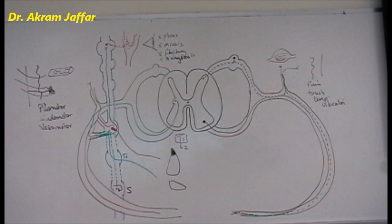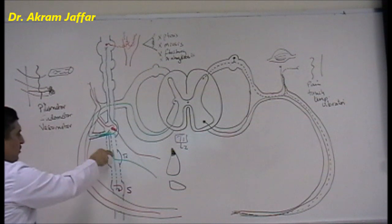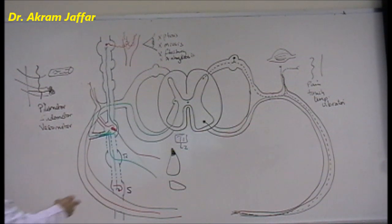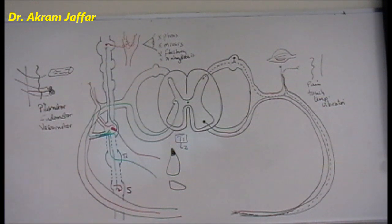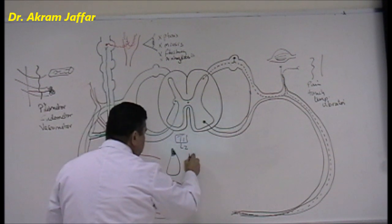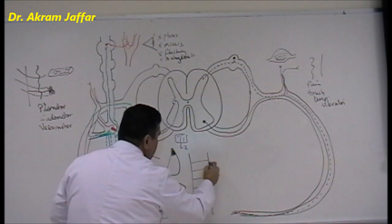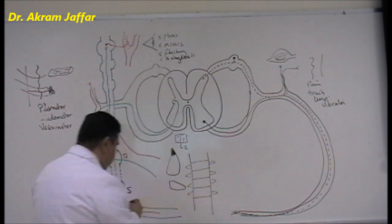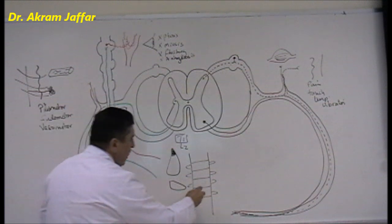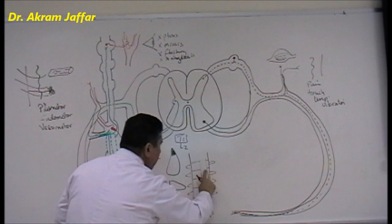Returning to the preganglionic fibers: they have three options — synapse at the same level, ascend or descend, or leave the medial side of the sympathetic trunk without synapsing to reach another ganglion. This third option involves synapsing not in a paravertebral ganglion, but in a ganglion located in front of the vertebral column. In the abdomen, in front of the vertebrae, lies the abdominal aorta.